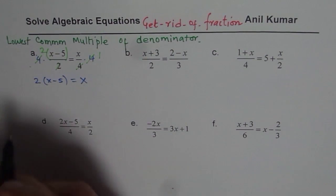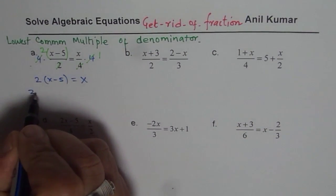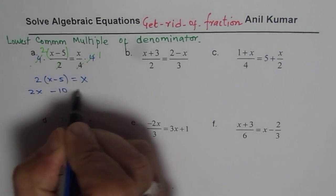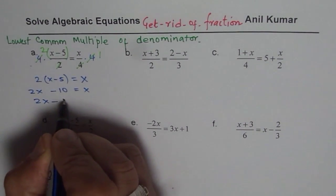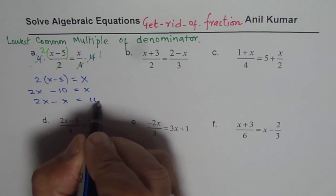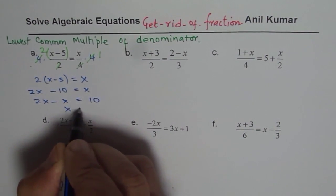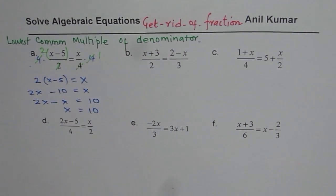Now expand the brackets. So you get 2x minus 10 equals to x. And now you can bring x's together like terms. Constants on the other side. So we get x is equals to 10 as our solution. So that is how you could actually solve such a question.